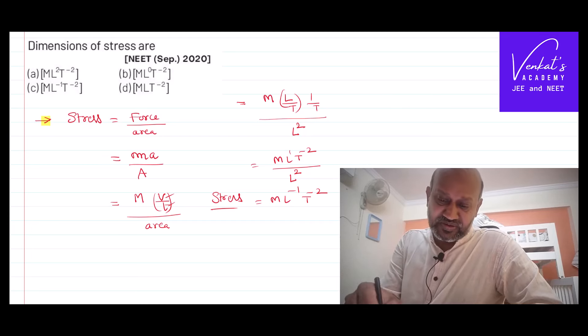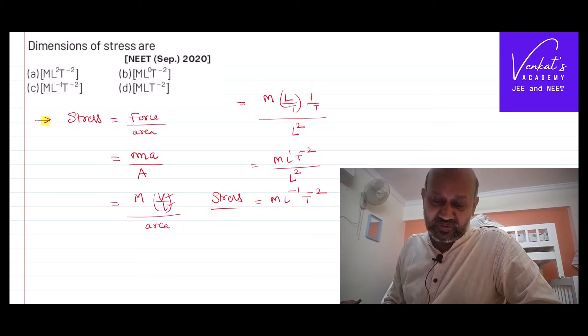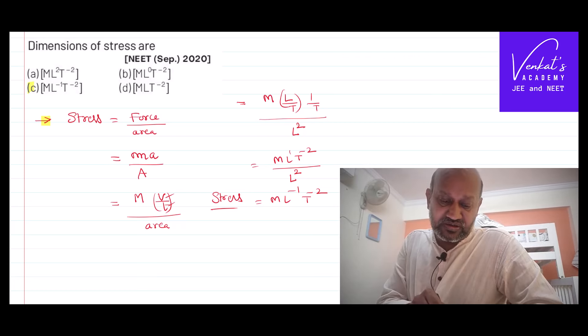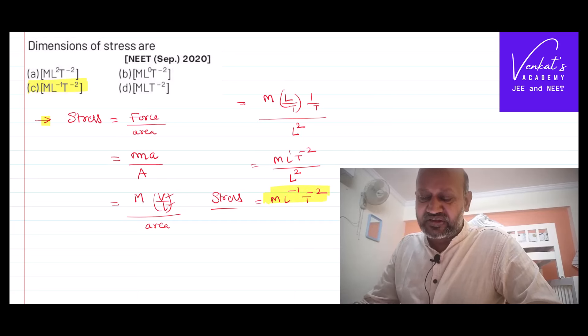So look at the options. M L power minus 1 T power minus 2 is option C, that's the answer for the question. There is nothing much to discuss about it. It was given in September 2020.